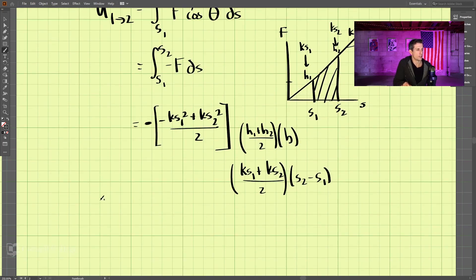The book just writes this as u from 1 to 2 equals negative 1 half ks2 squared minus 1 half ks1 squared. That got a little deep into the math there, but that's how we derive the formula for work of a spring.